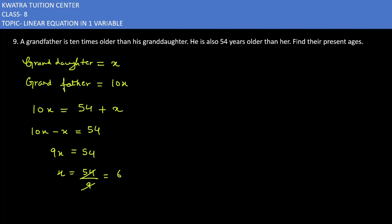54 over 9 is 6. x is 6. 10x is 60 years. 6 years for granddaughter's age, and grandfather's age is 60 years.